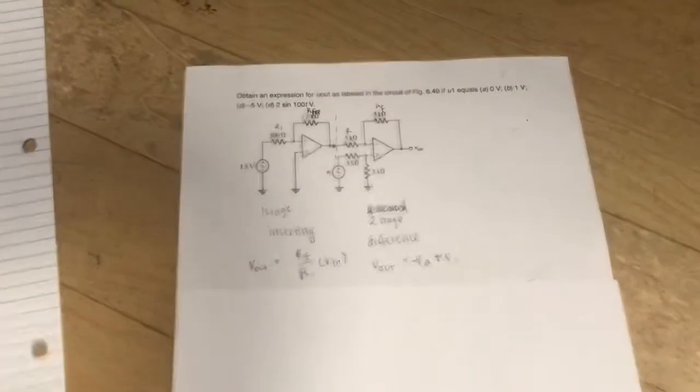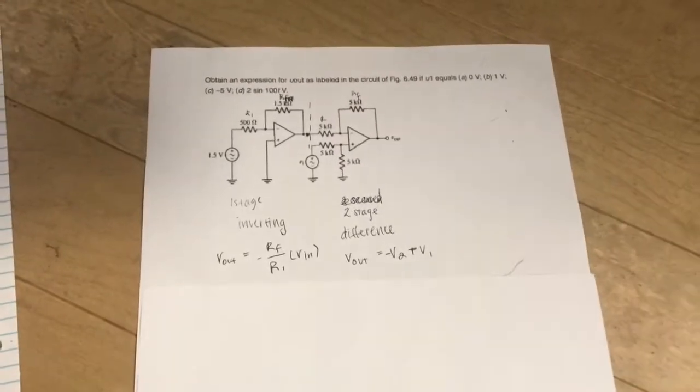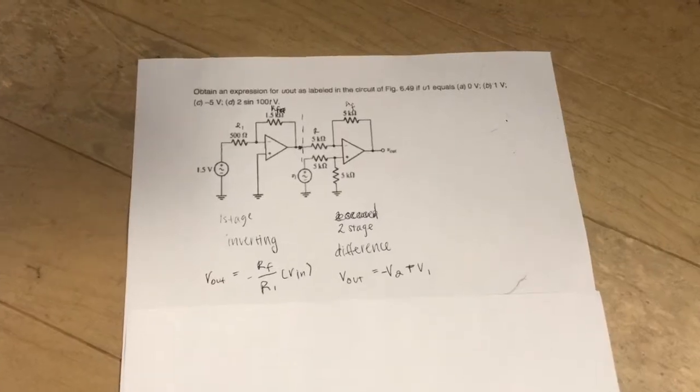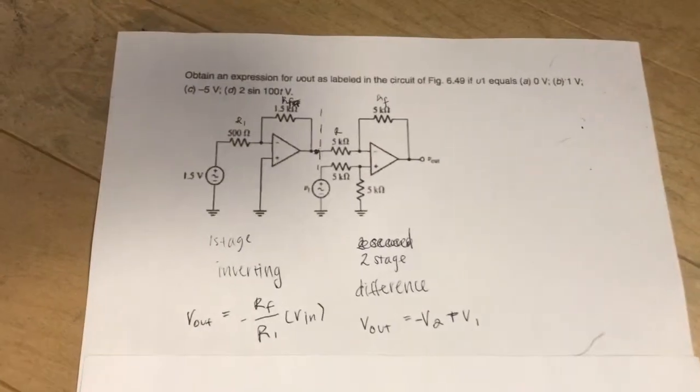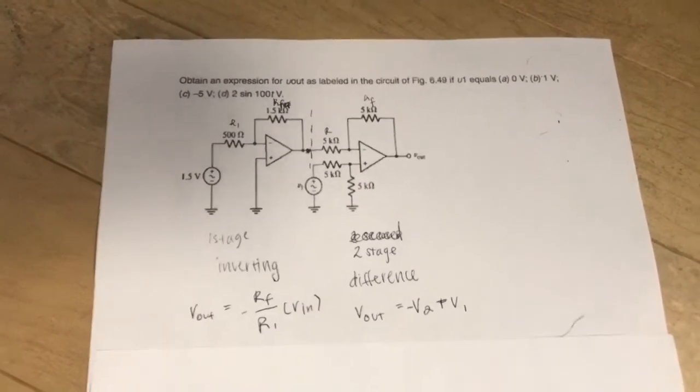So today, we will be doing chapter 6, number 21 from the textbook, and it shows a cascaded op amp.